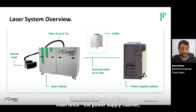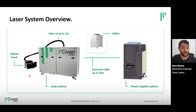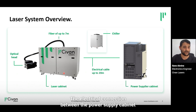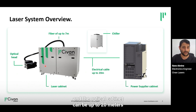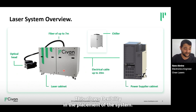The laser is made of three main units: the power supply cabinet, the optical cabinet, and the AOH. A chiller is needed to operate the laser. The electrical connection between the power supply cabinet and the optical cabinet can be up to 20 meters, and up to 7 meters between the optical cabinet and the AOH. This allows flexibility in the placement of the system.